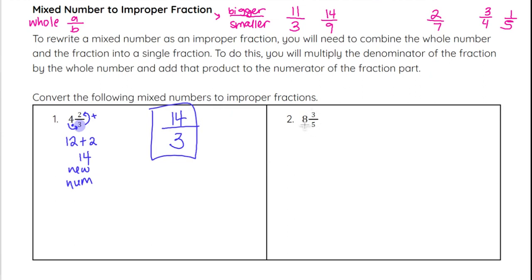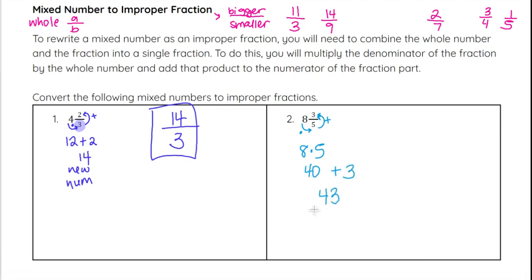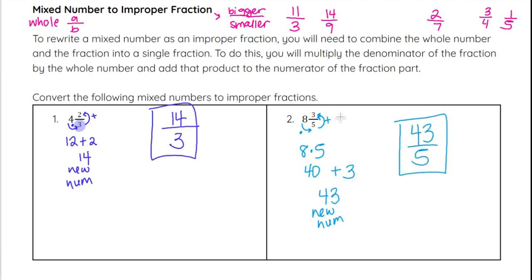For 8 and 3 fifths, we take the whole number and multiply by the denominator: 8 times 5 gives us 40. Then we add the numerator of the fraction, which is 3. So 40 plus 3 gives us 43 as our new numerator. We're going to have 43 over 5 as our improper fraction representing 8 and 3 fifths.